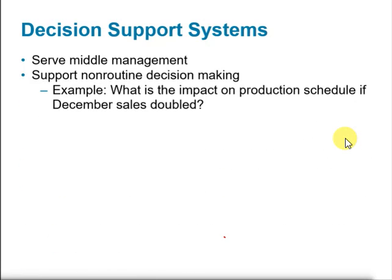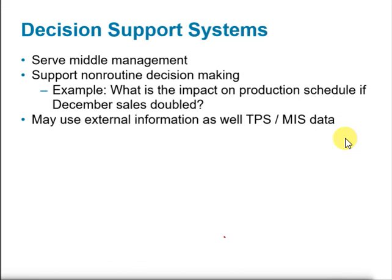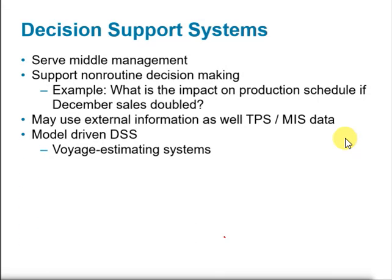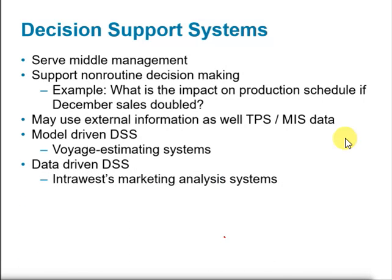Decision support systems also serve middle-level management and support non-routine decision making. A typical example is a system that models the impact on production schedules if a particular month's sales is doubled. Decision support systems rely on information from both the transaction processing system and the MIS. They are usually model-driven, pre-programmed with particular models so that when you enter data, the system produces output to support an informed business decision.